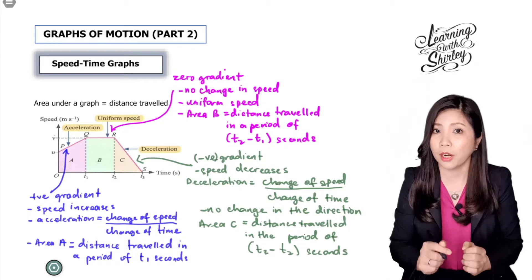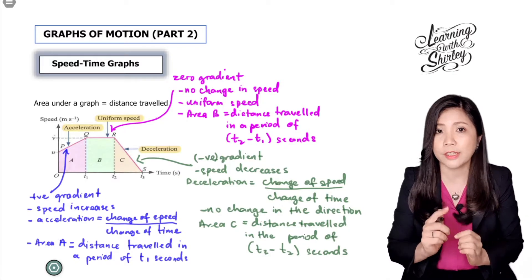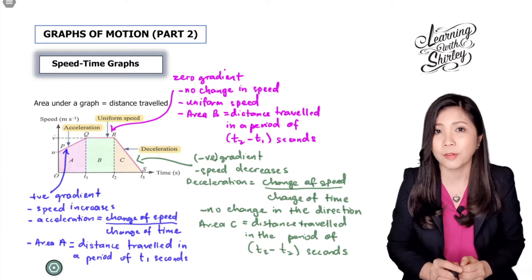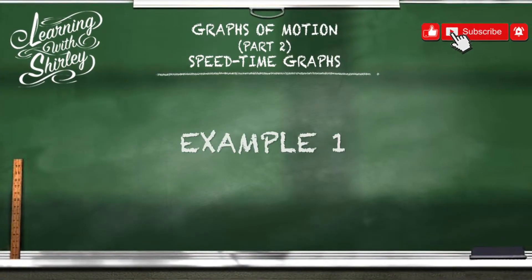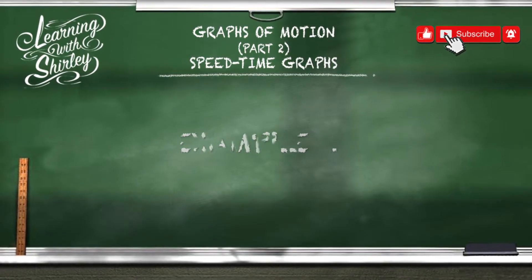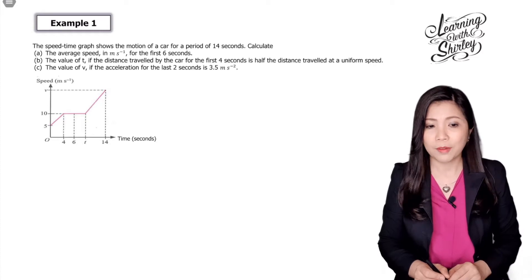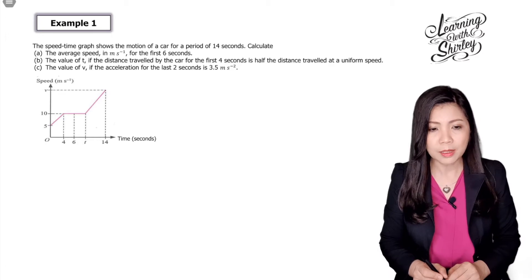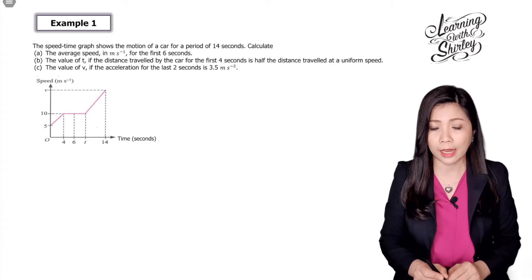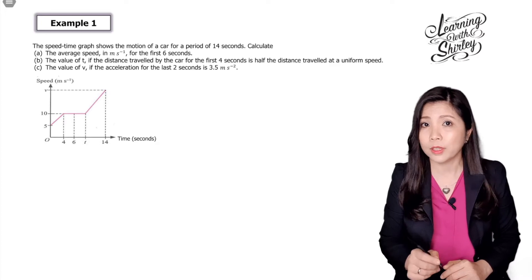That's all about the speed-time graph. Now let's move on to the first example. The speed-time graph shows the motion of a car for a period of 14 seconds. Calculate A: the average speed in meters per second for the first six seconds. Average speed is total distance over total time.